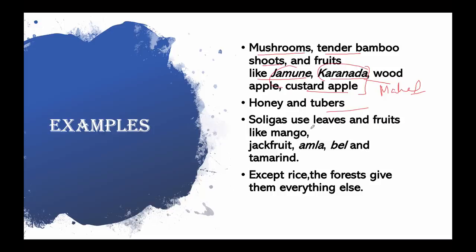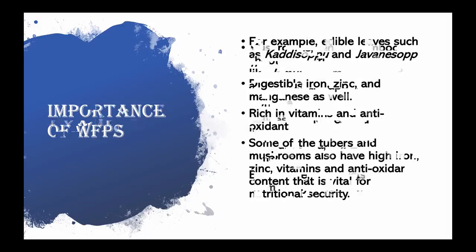In the hot dry summers, Soligas also use the leaves of certain plants like Ceropegia, and fruits like mango, jackfruit, amla, bael, and tamarind also act as wild food plants — even if they are not cultivated or domesticated, they grow naturally. Except for rice, which they grow themselves, the forest gives them everything else. They depend so much on the forest that they don't need to depend on anything else for food and livelihood. When these resources grow in excess, they even sell them to local markets.